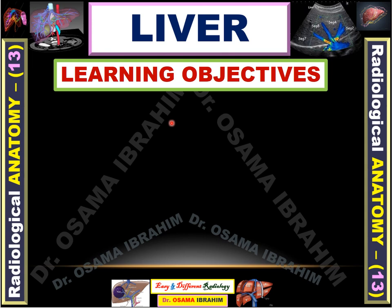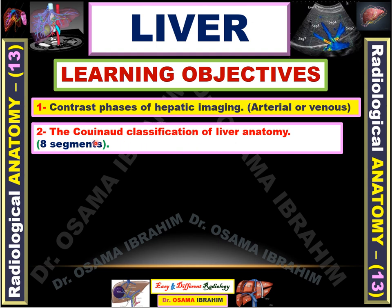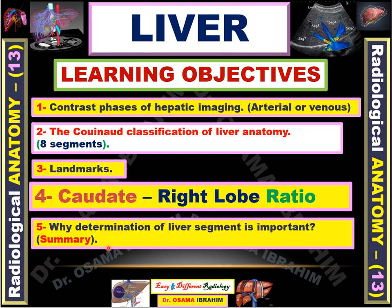The learning objectives from my presentation today: first, I will talk about the contrast phases of the hepatic images — arterial and venous — and their importance for diagnosing some lesions. Second, I will talk about the Couinaud classifications of liver anatomy, which classify the liver segments into eight segments, and how to differentiate these segments through landmarks. Most importantly, the caudate right lobe ratio, which can help in detecting early diagnosis of liver cirrhosis. At the end, I will talk about why determination of liver segments is important for surgeons and the referring physician.